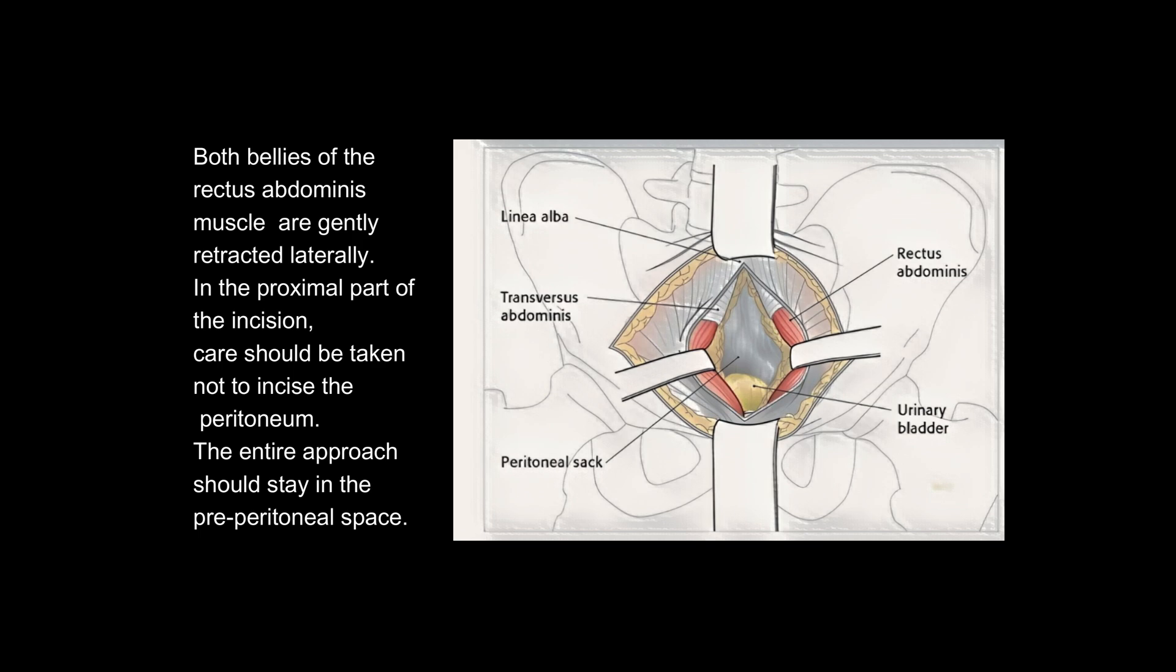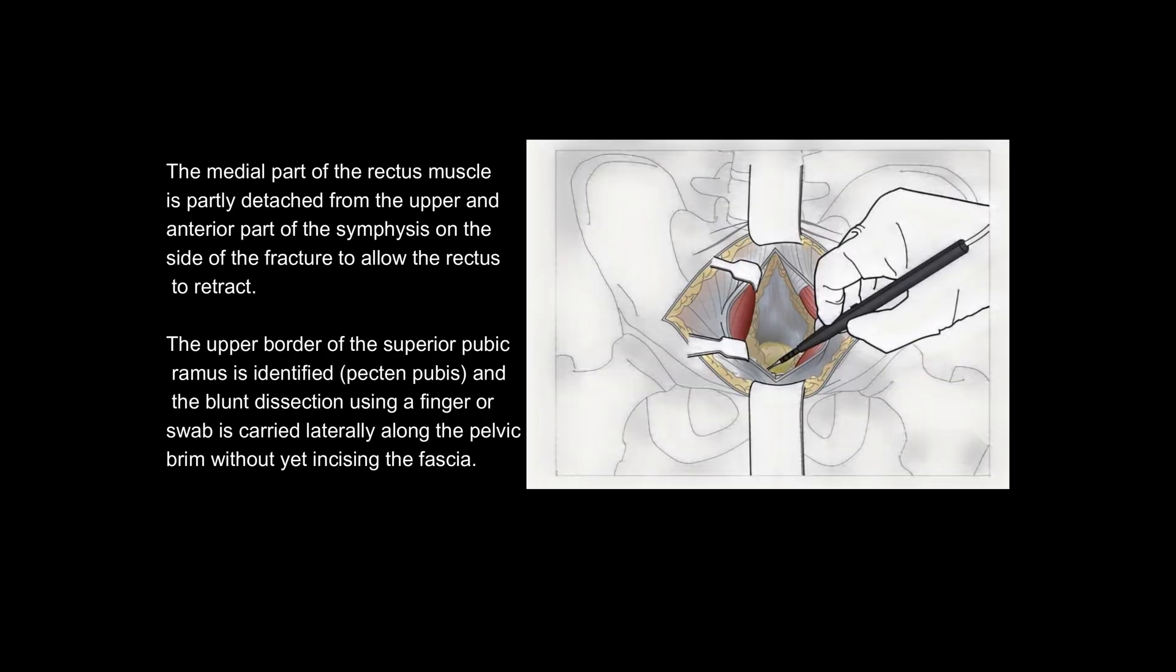The entire approach should stay in the pre-peritoneal space. The medial part of the rectus muscle is partly detached from the upper and anterior part of the symphysis on the side of the fracture to allow the rectus to retract.